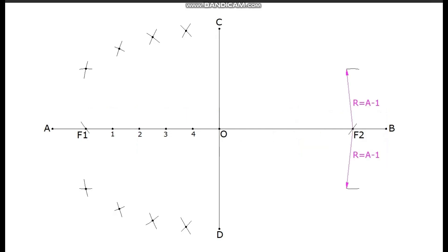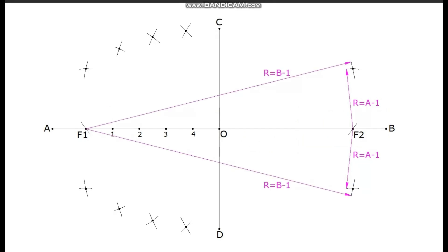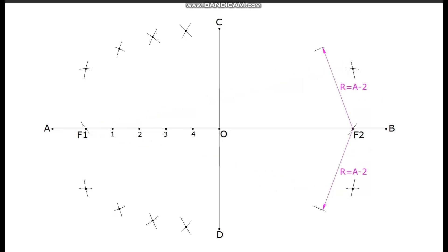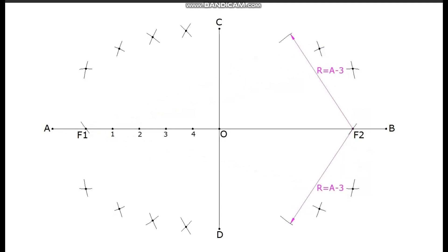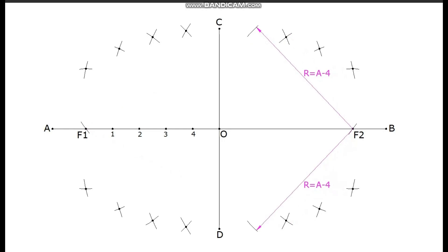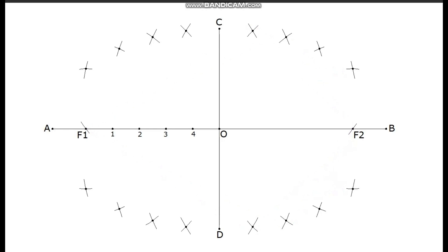Measure the distance of A1; with F2 as center, draw arcs above and below the major axis. Measure the distance of B1; with F1 as center, draw arcs above and below the major axis to intersect the previous arcs drawn from F2. Measure the distance of A2; with F2 as center, draw arcs. Measure the distance of B2; with F1 as center, draw arcs to intersect the previous arcs. Measure the distance of A3; with F2 as center, draw arcs. Measure the distance of B3; with F1 as center, draw arcs to intersect the previous arcs. Measure the distance of A4; with F2 as center, draw arcs. Measure the distance of B4; with F1 as center, draw arcs to intersect the previous arcs.